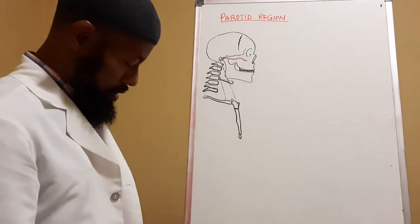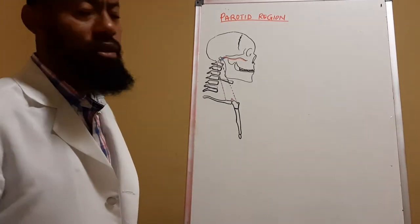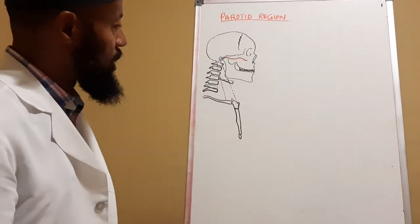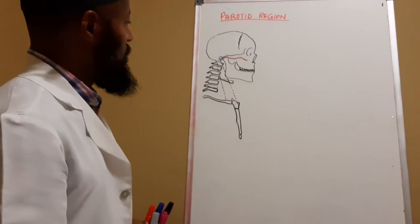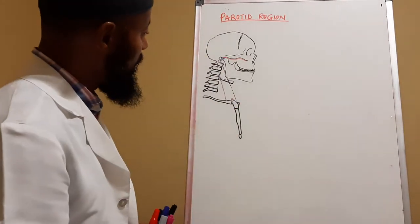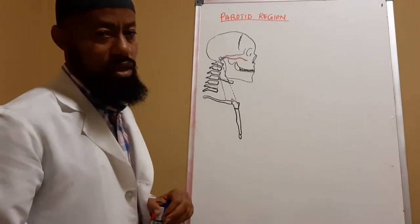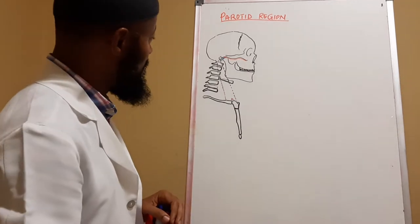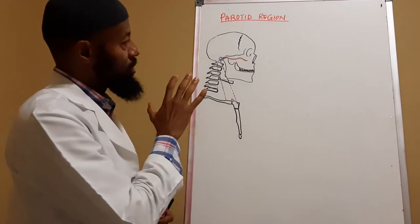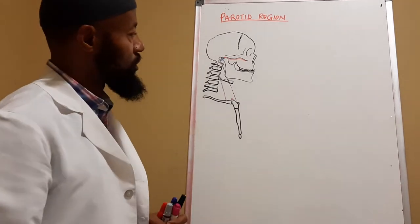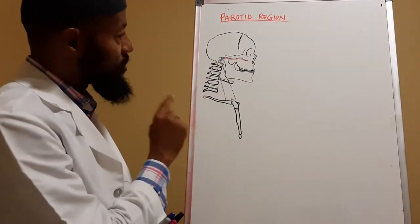Good day class members. We will be discussing the parotid region. From the diagram on the board you will see the skull — the lateral view — where the zygomatic arch is visible. You will also notice the external auditory meatus opening into the middle ear and the deep ear, and then the lower jaw which is the mandible. The parotid region is located posterior lateral to the skull or the face.